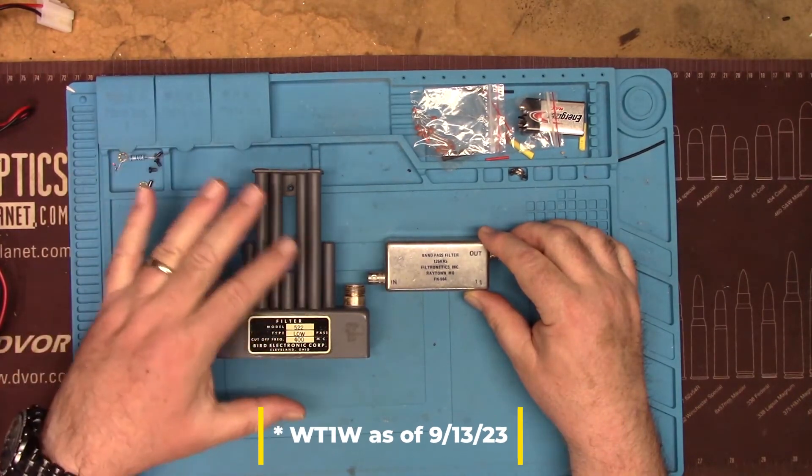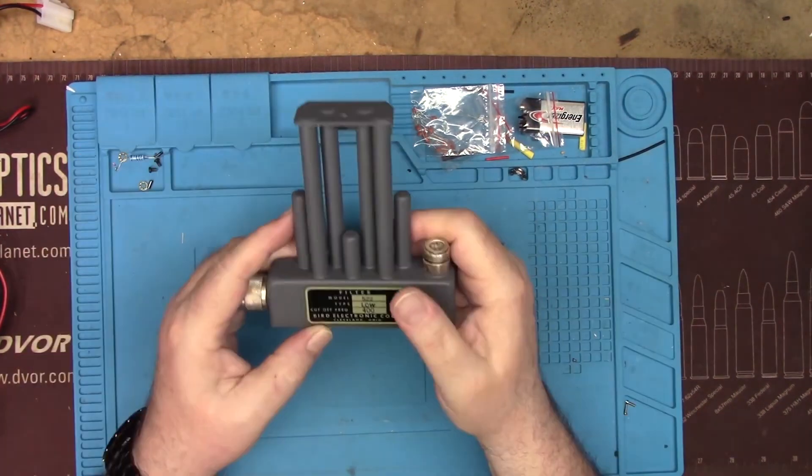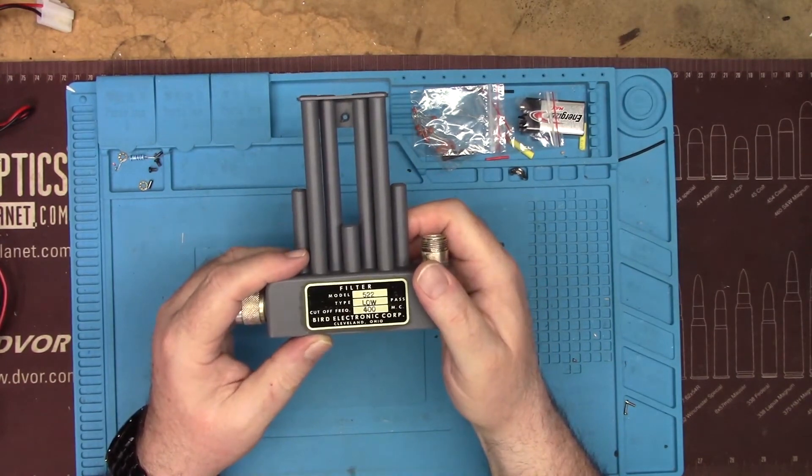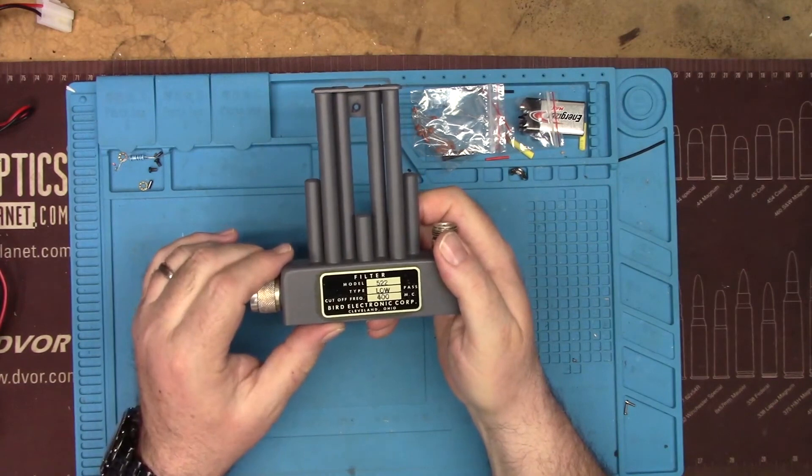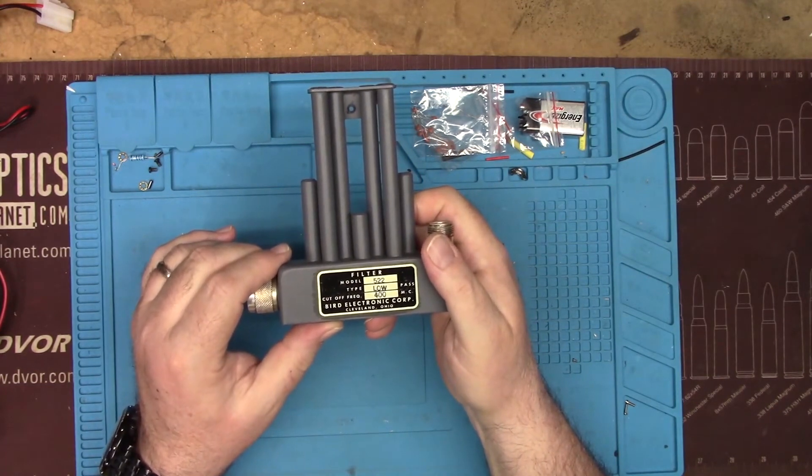So these are a couple of filters that I purchased. These are used off of eBay. So this is low-pass, and what a low-pass filter is, is everything beneath that frequency will pass, and everything above that frequency will be blocked.